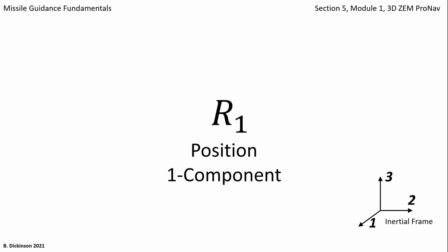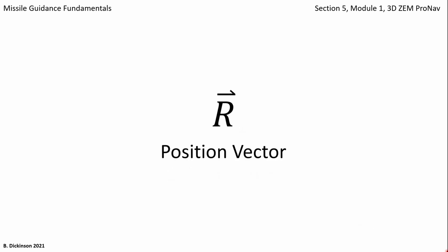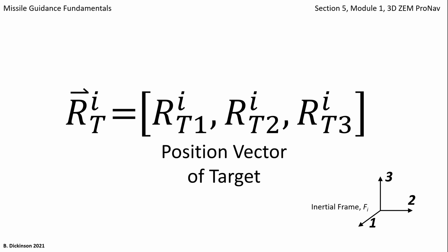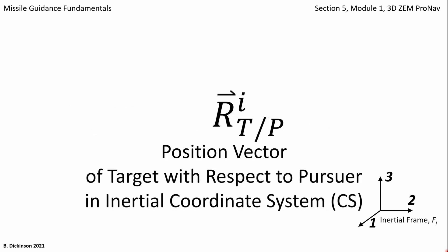The variable R is position. R subscript 1 would be the one component of a position vector. The position vector is denoted R with an arrow above it. R sub t would be the position vector of a target. RT1 would be the one component of the target position vector. Here's the position vector broken out into its three components, where the superscript i denotes the inertial coordinate system assigned to an inertial frame of reference. This is the position vector of the target with respect to the pursuer — that's t forward slash p — also termed the relative position.